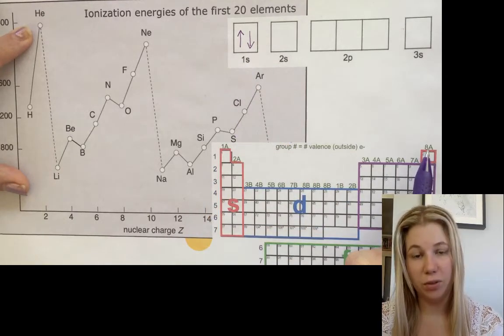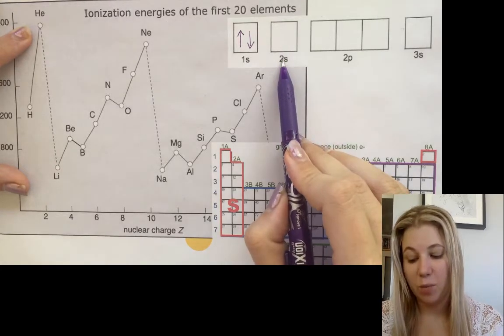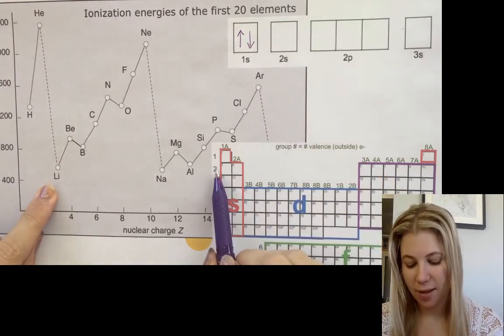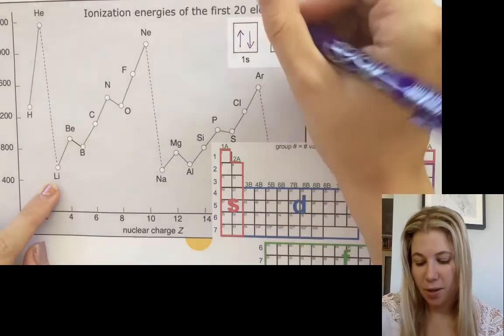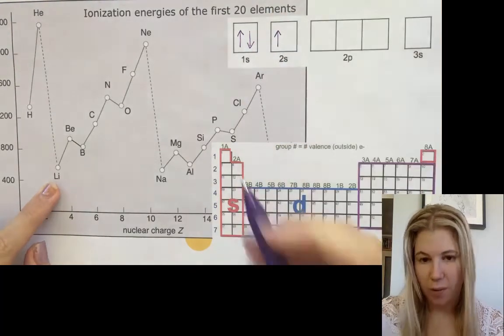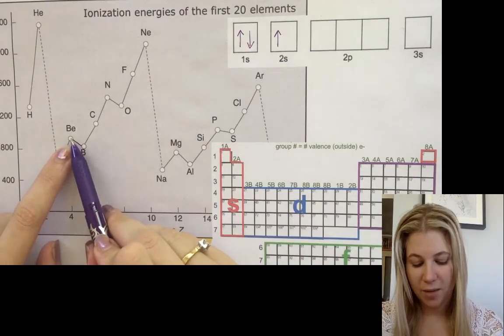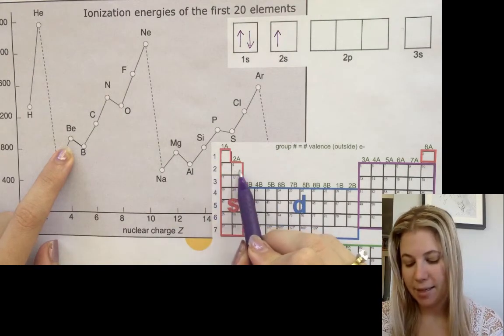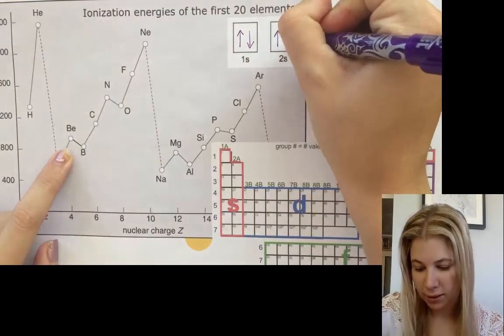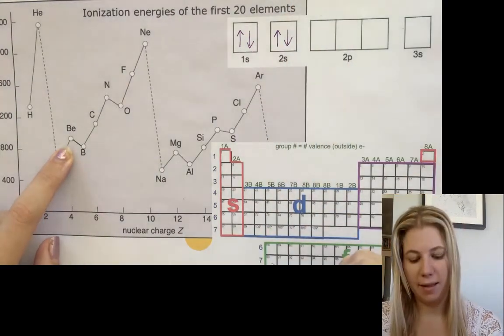Our next element will move to the 2S. So here's lithium, we've got two. It's still in the S block, so the first electron will go in here. And now the next one, beryllium, again it's still in the S block. It's in period number two and so it's going to go in here like this.